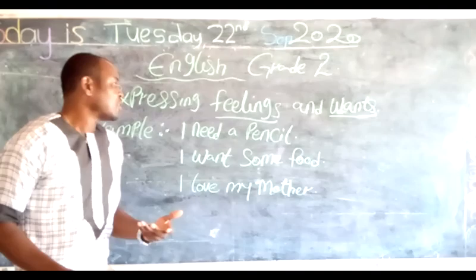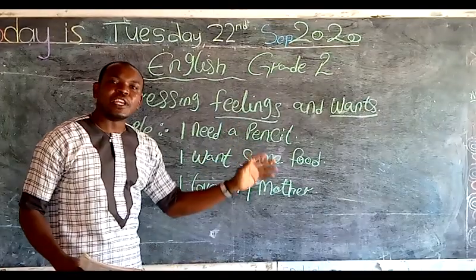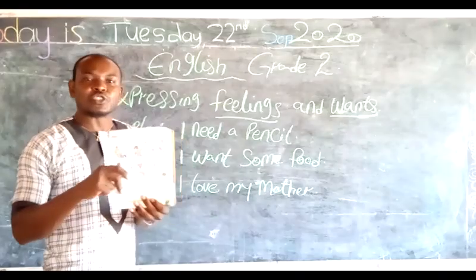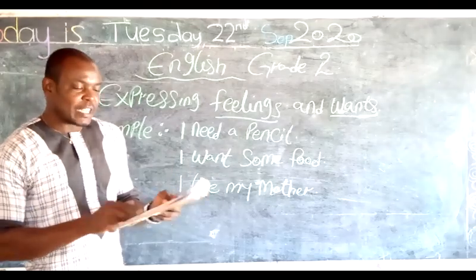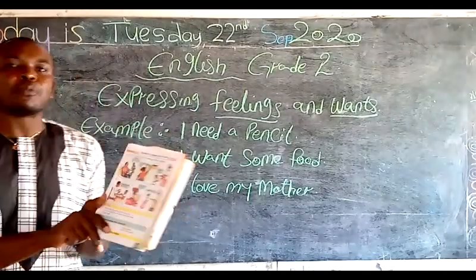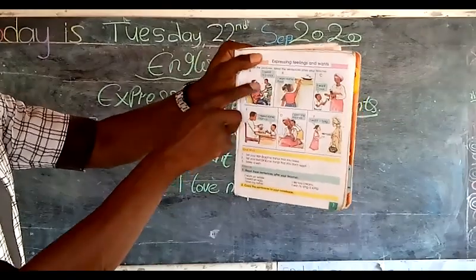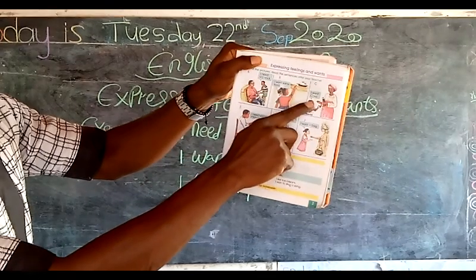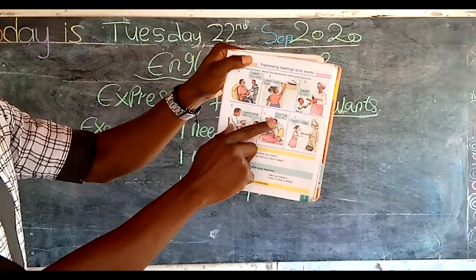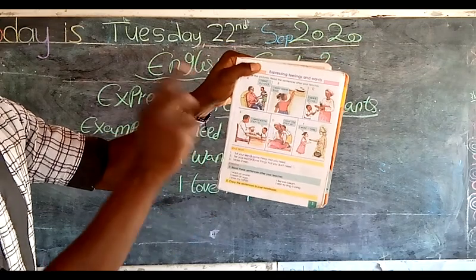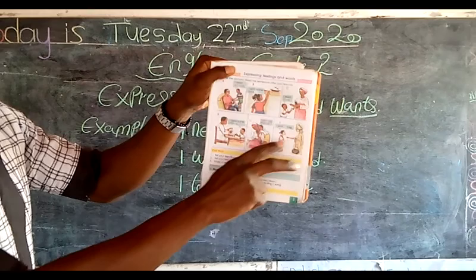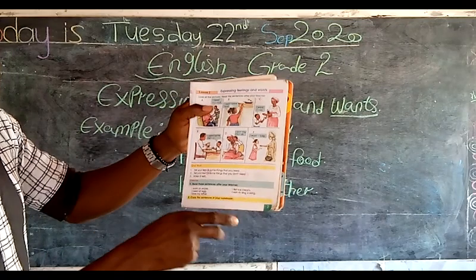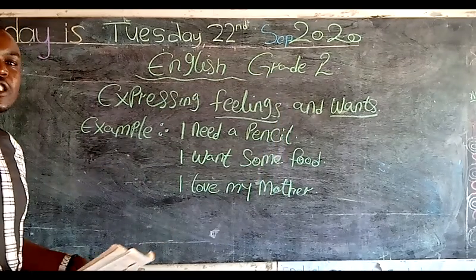Don't get confused — there is a difference between feelings and want. With the examples on the board, and as you read your textbook, you should be able to understand better. We have examples like: 'I need a pencil,' 'I want some food,' 'I want a Coke,' 'I need some money,' 'I love my mother,' 'I want a bag.'